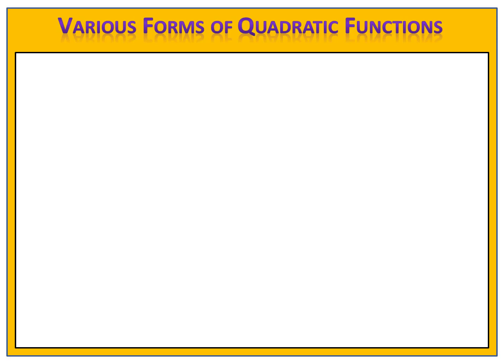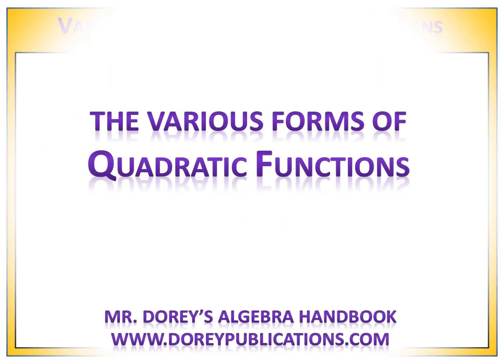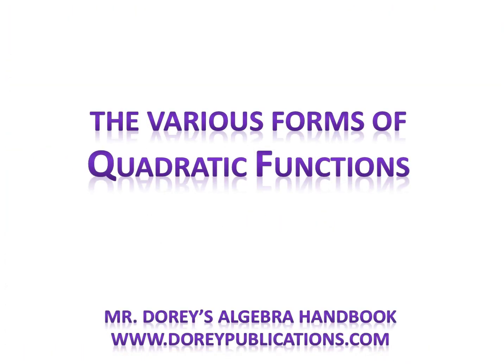So in summary, any time you want to find the y-intercept, you should use the standard form. When you want to find the vertex or the maximum or minimum, the vertex form is the most convenient form to use. And when you want to find the coordinates of the x-intercepts or the zeros, the factored form is your best bet. This is everything you need to know to work with the various forms of quadratic functions. Remember, you can learn more about quadratic functions in Mr. Dory's Algebra Handbook available at www.dorypublications.com.